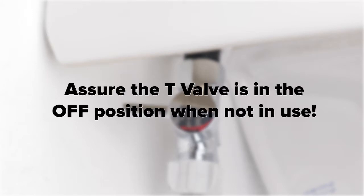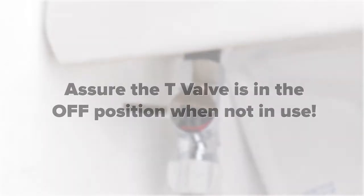Failure to turn off the bidet at the T-valve after each use may weaken the bidet hose or the spray head over time and lead to damages as they are not meant to be under constant water pressure.